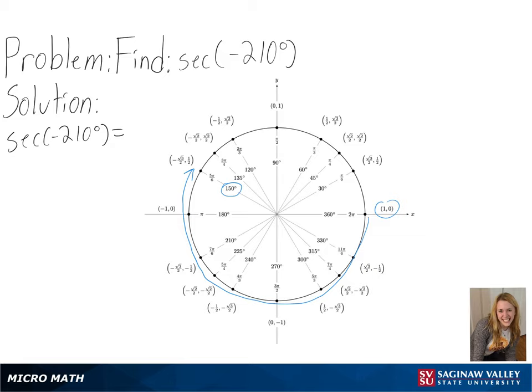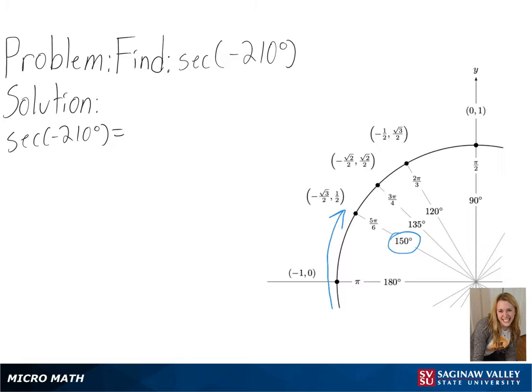Since we are finding our secant value, we will need to find 1 over the cosine value, or 1 over x value, since that will give us our secant value.